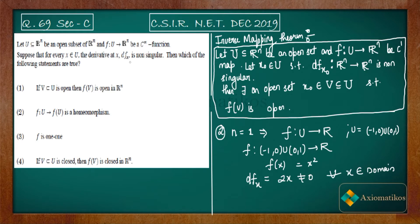For n greater than one you need the Jacobian, but I'm focusing on the one-dimensional case here. Df(x) = 2x being non-zero means it is non-singular. We have satisfied every property: U is open, f is C∞ (infinitely differentiable), and Df(x) is non-zero. But do you think it's a homeomorphism? No, it is not — and here's why.